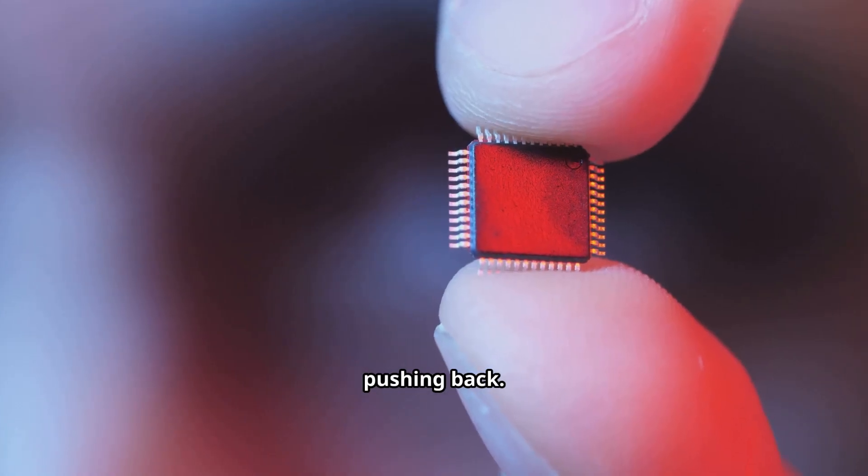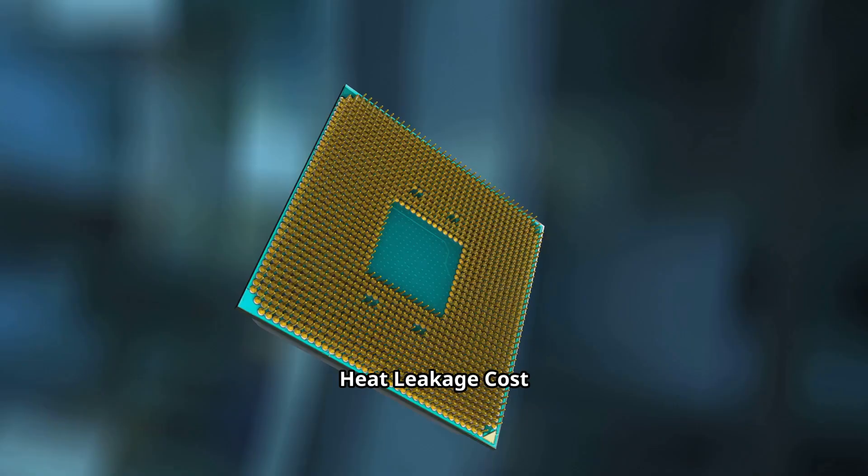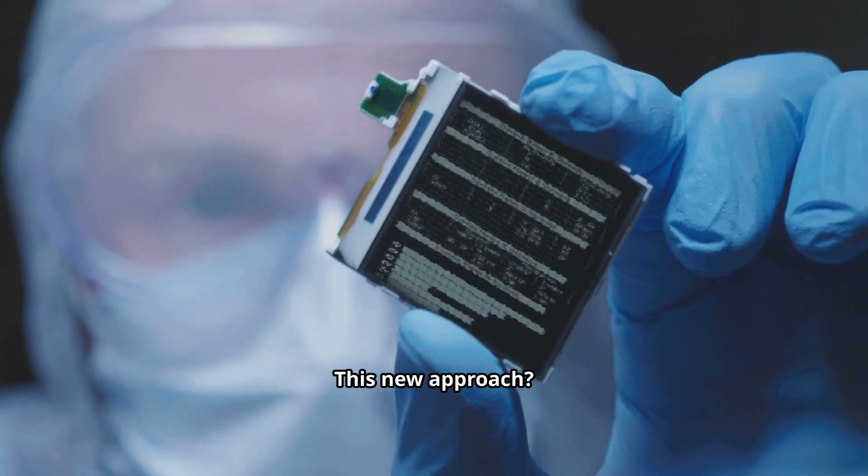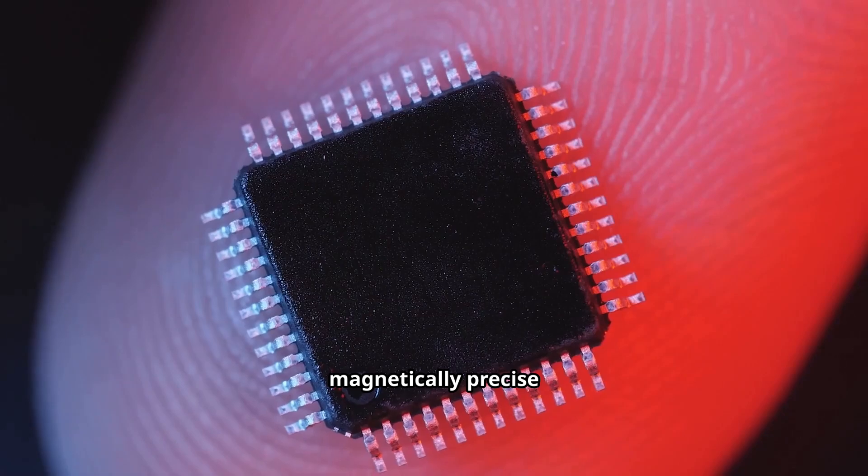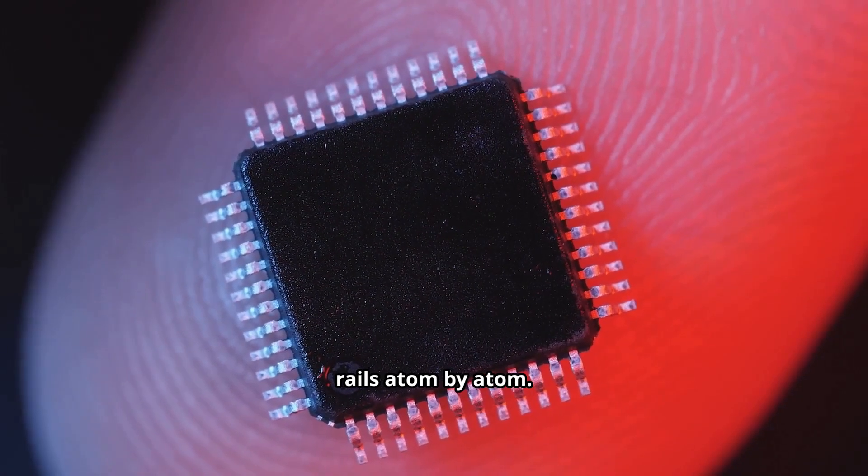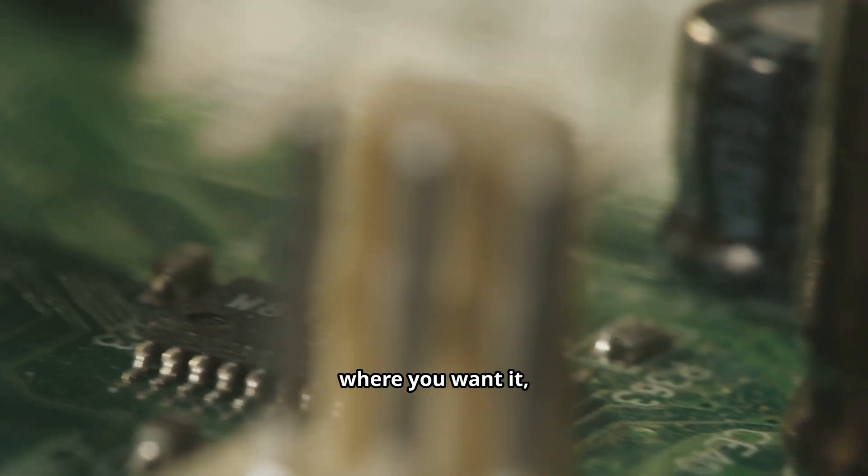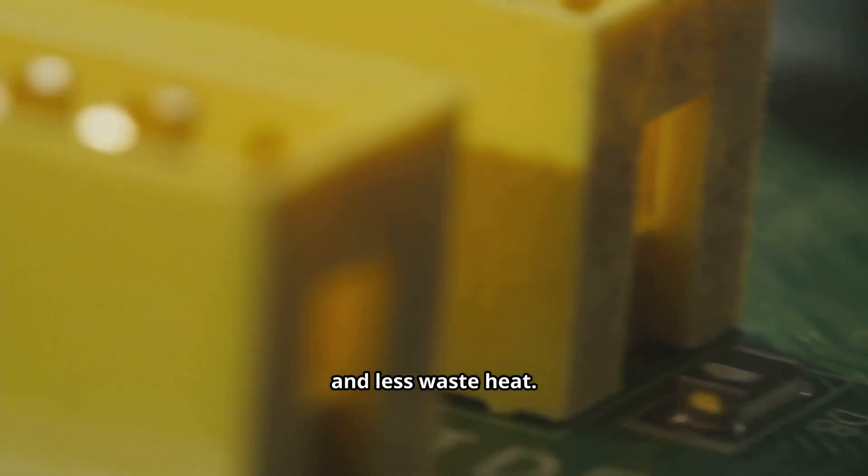But physics keeps pushing back. Heat leakage, cost of squeezing one more lane in. This new approach? It's like building magnetically precise rails, atom by atom. You place what you want, where you want it, with fewer defects and less waste heat.